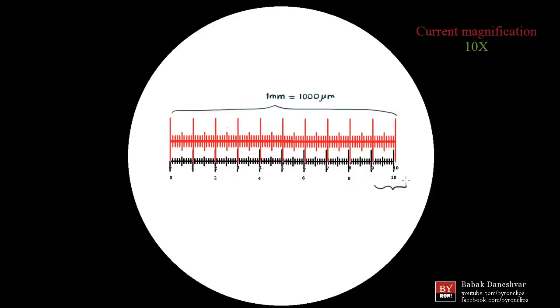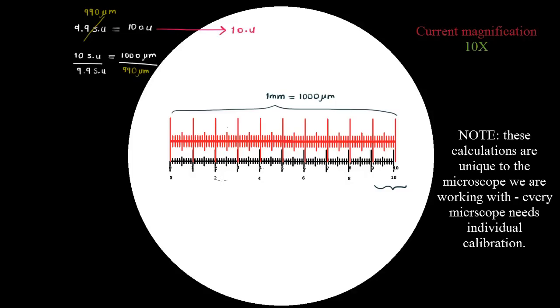Now if you look over here you'll notice that the ocular ruler and the stage ruler are not lining up perfectly. To be precise, 9.9 stage units, 9.9 units of the stage micrometer are lining up with the entire length of the ocular ruler, ten ocular units. Now I already mentioned that ten stage units, or the entire length of the stage micrometer is 1000 micrometers. Which means that the length that we have now, 9.9, has a physical length of 990 micrometers. Which is great because now we know that ten ocular units equal 990 micrometers, allowing us to conclude that one ocular unit equals 99 micrometers.